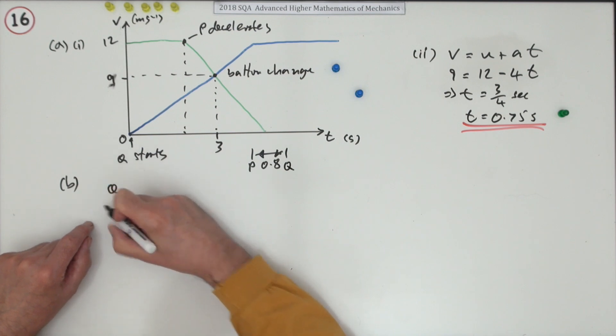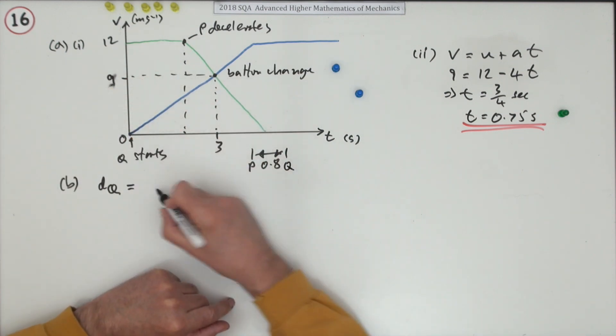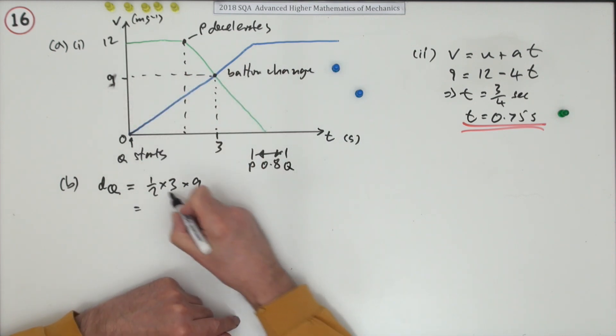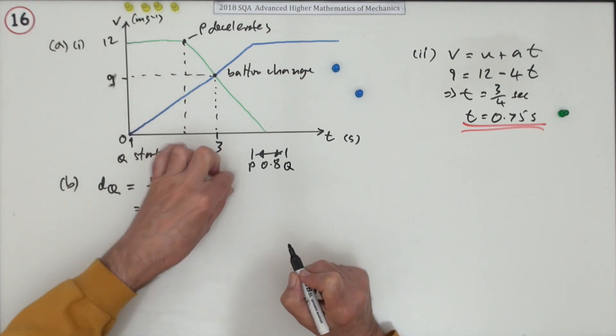So Q, what's the distance travelled by Q? That'll be the area under the velocity time graph for Q. It's a triangle. A half base times height. A half of 3 times 9. So that's going to be a half of 27, 13.5 metres.